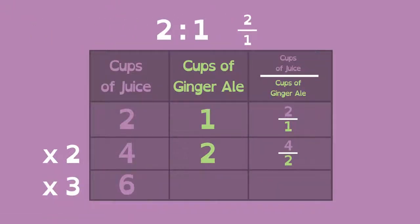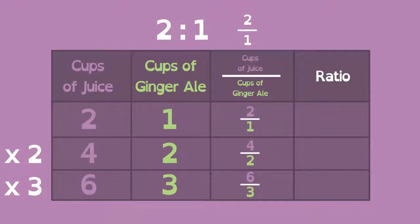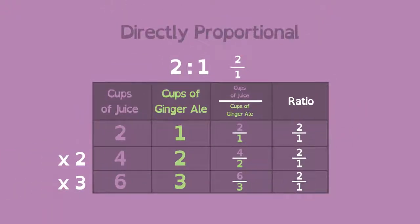If he triples his recipe, he'll need three cups of ginger ale. All the ratios of juice to ginger ale are equivalent. They all simplify to two to one. This means that the relationship between the two quantities of juice and ginger ale are directly proportional.